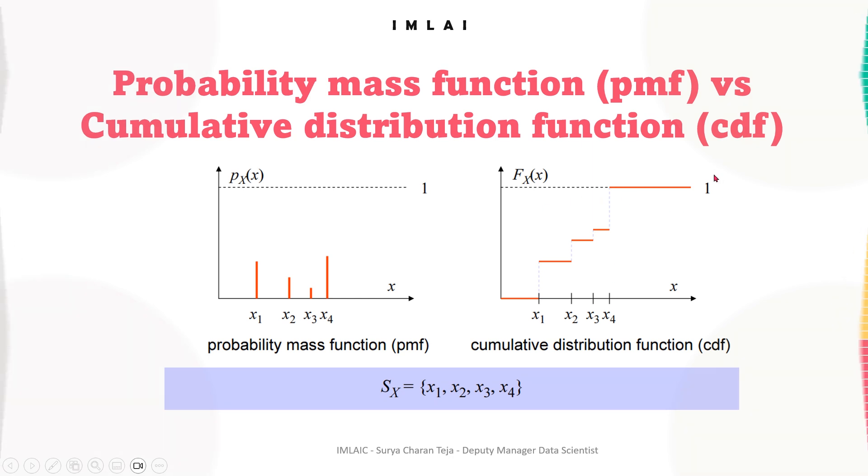That's what had happened even for rolling a die. The cumulative probability, the cumulative distribution probability of 6 has become 6 by 6, which is 1, and that's what you can clearly see.